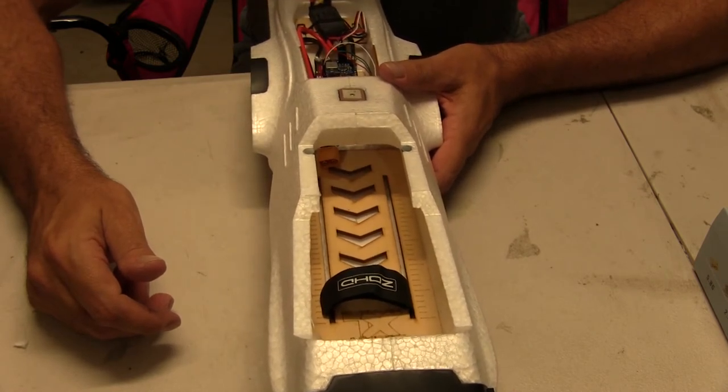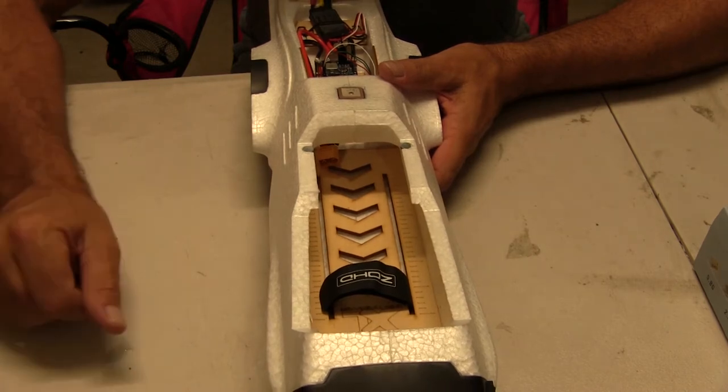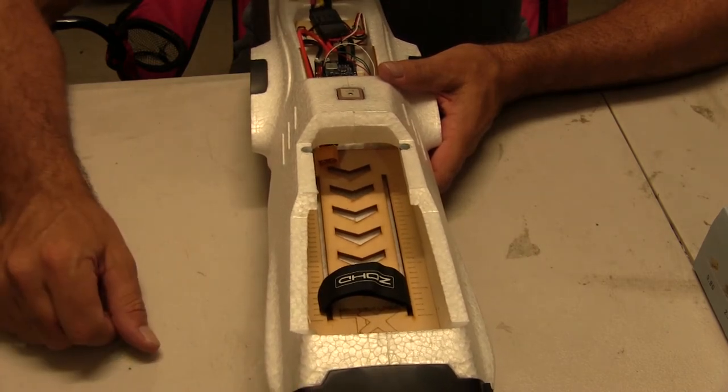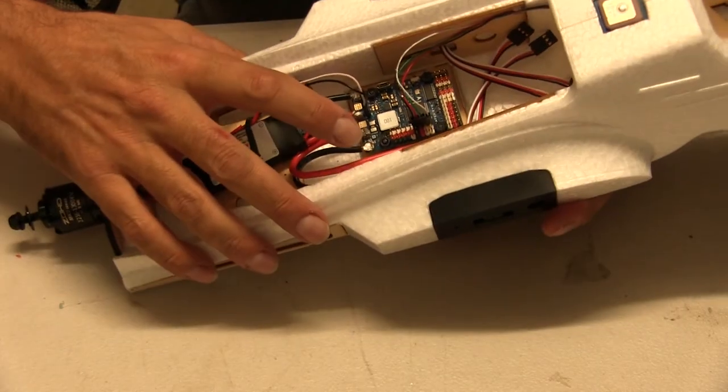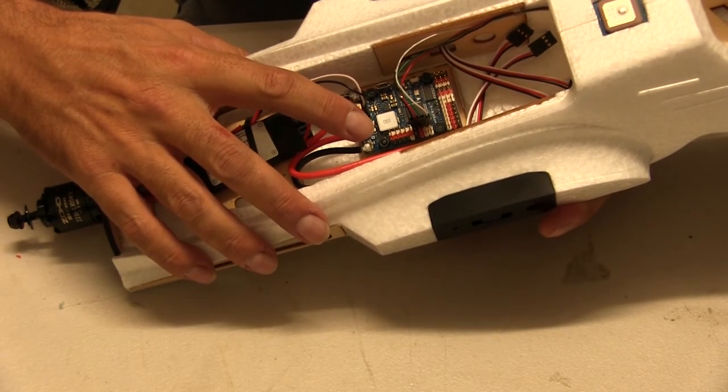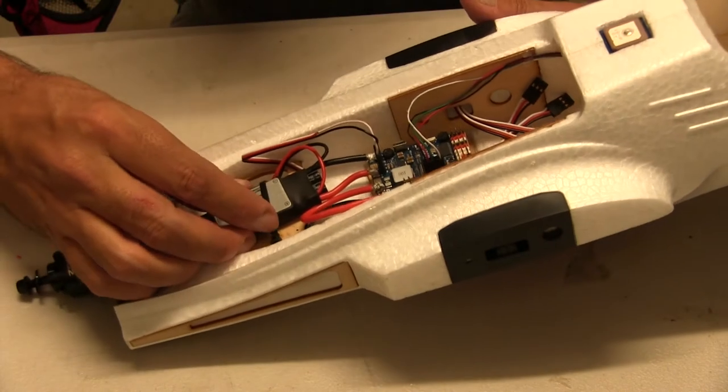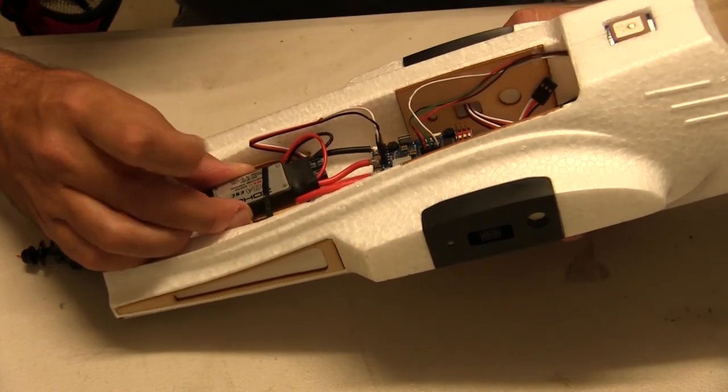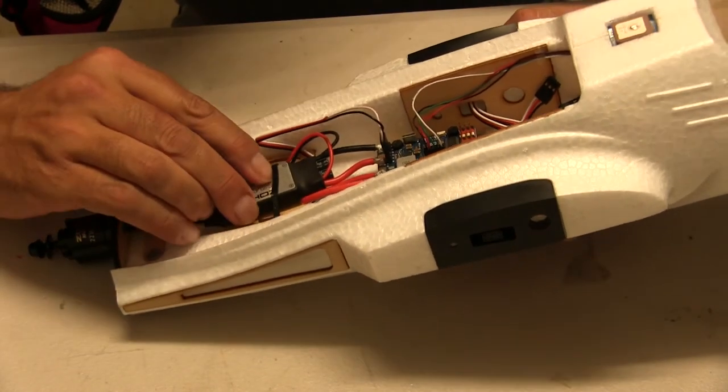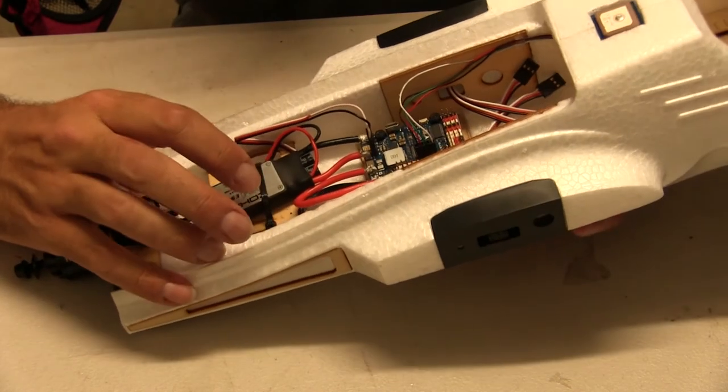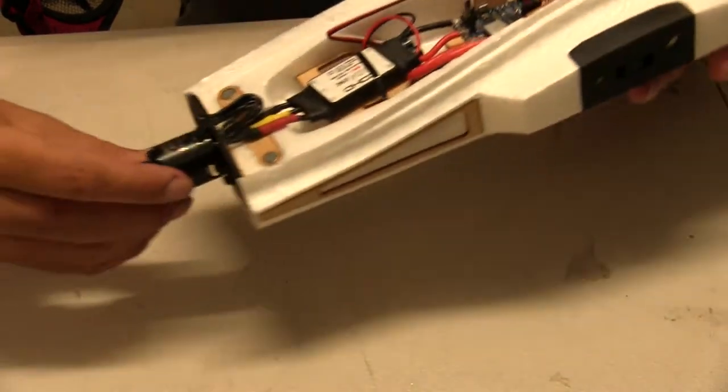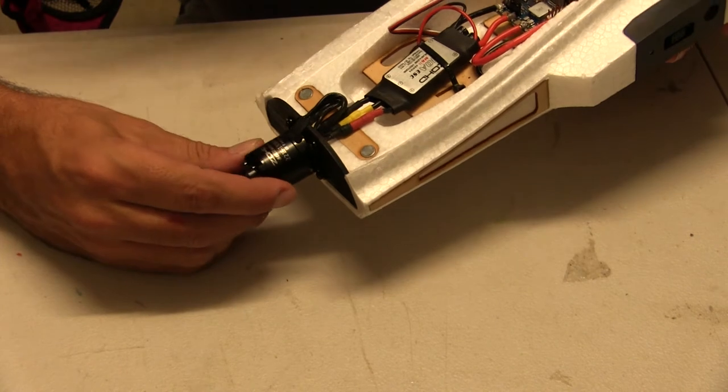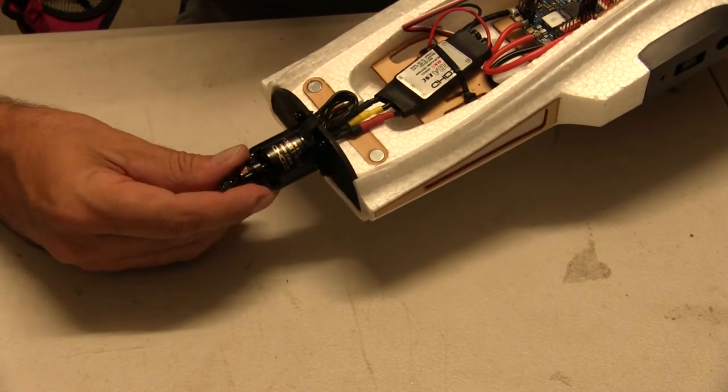It came standard with the ESC and the ZOHD motor. I've got a Matec F722 wing flight controller for it. It came standard with the ZOHD ESC, a 30 amp ESC, and it's come standard with a 1300 kV ZOHD motor.